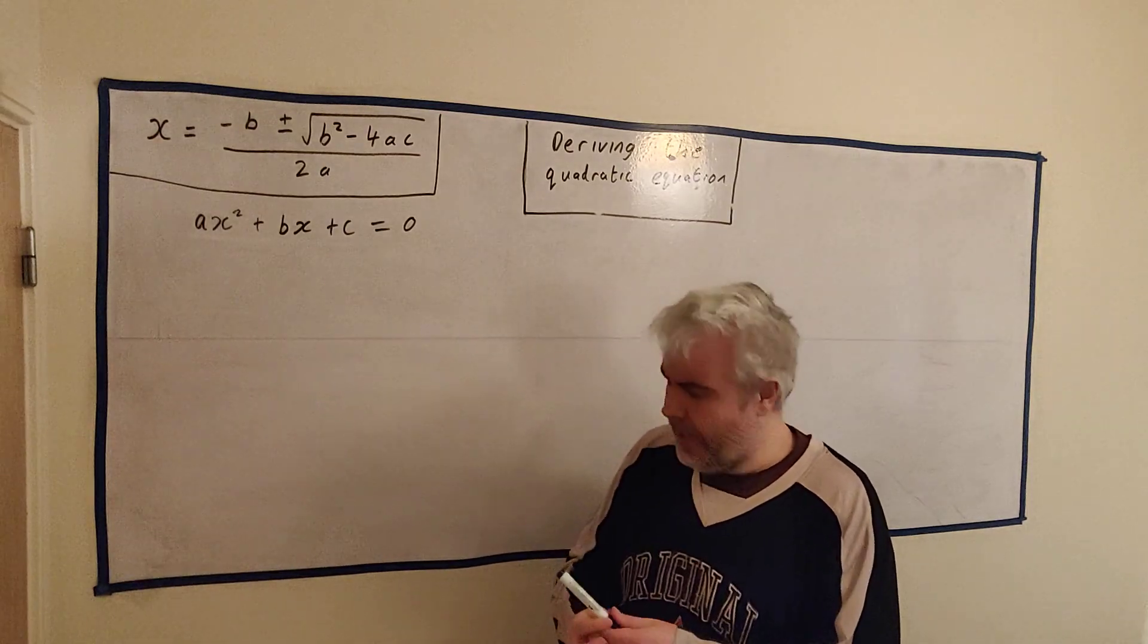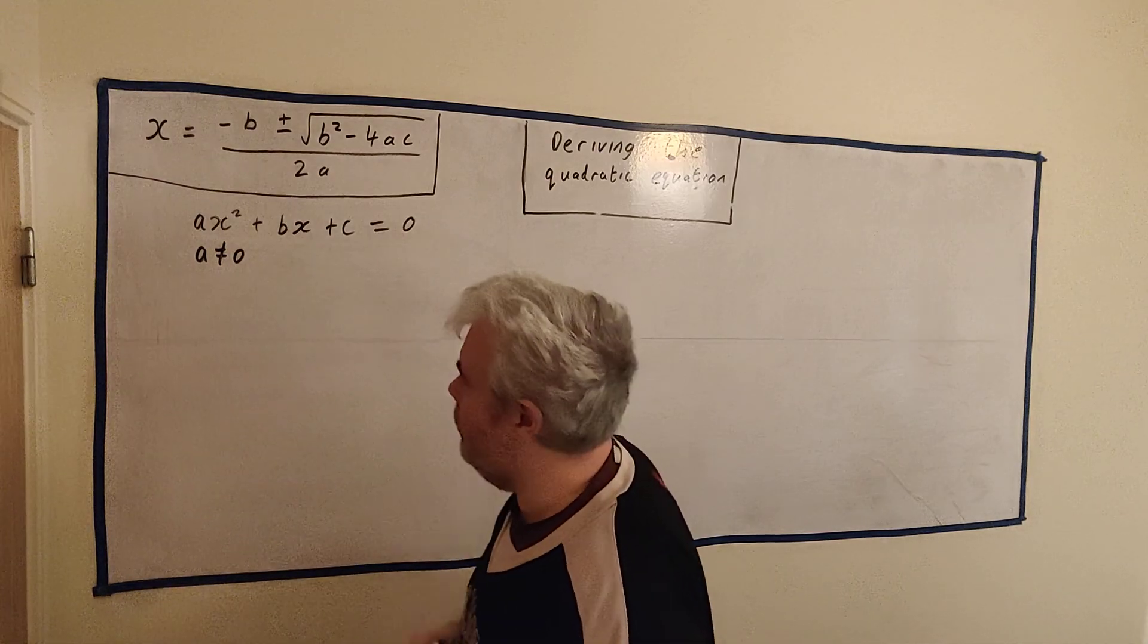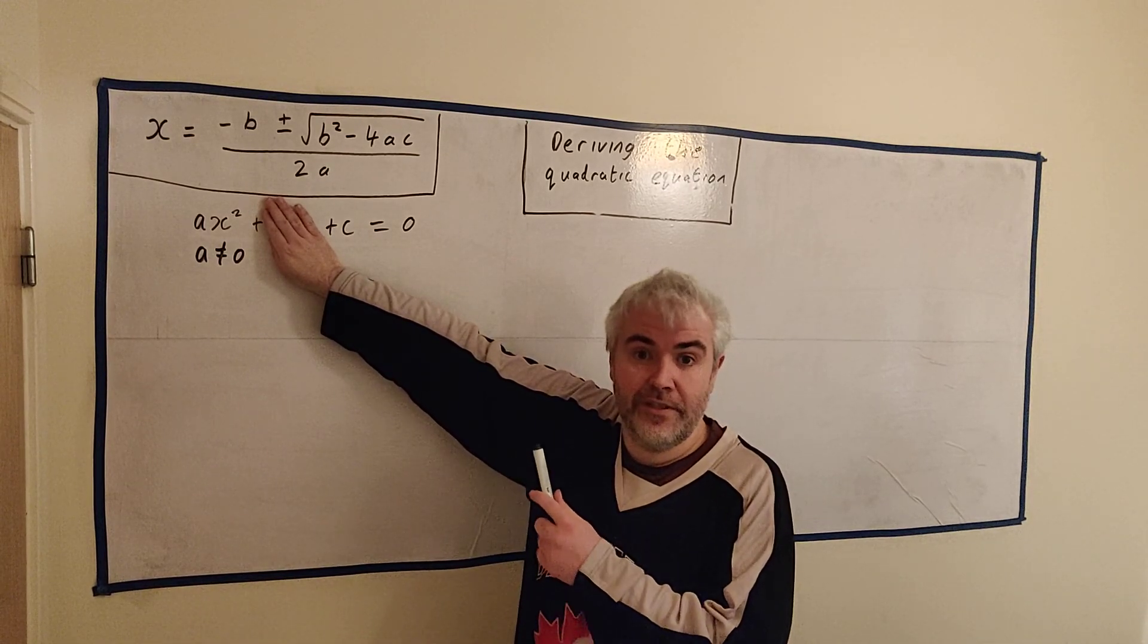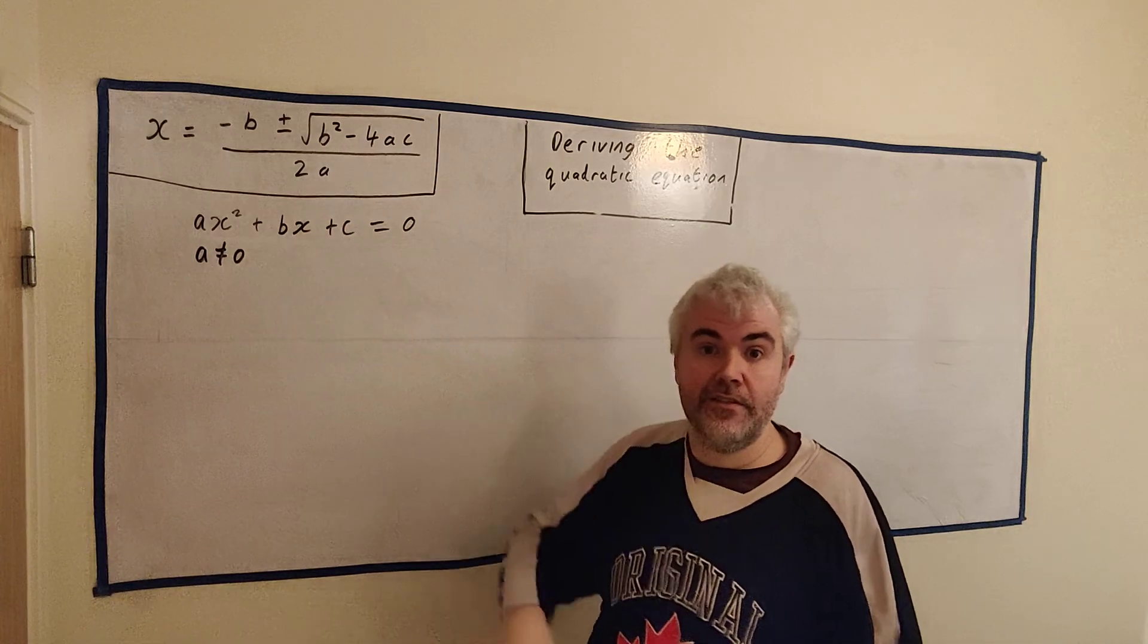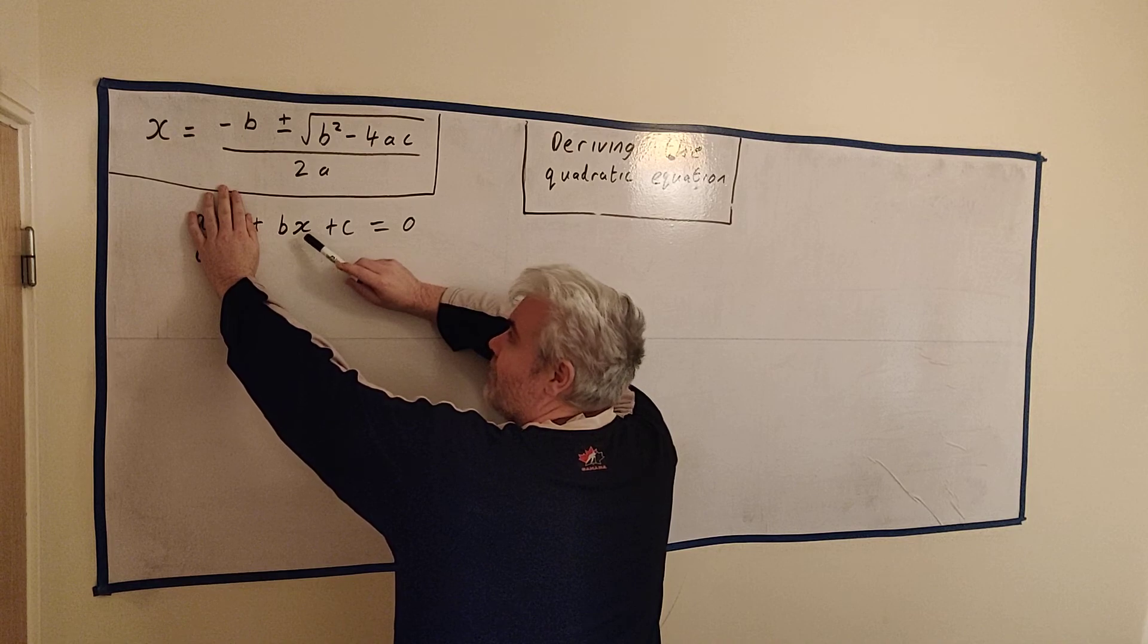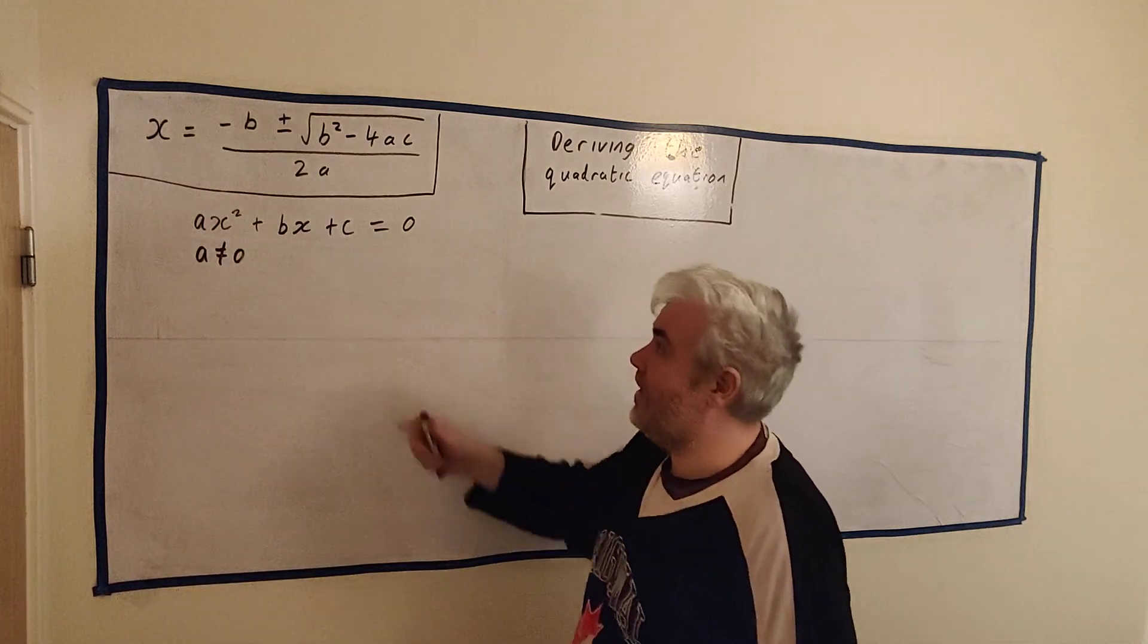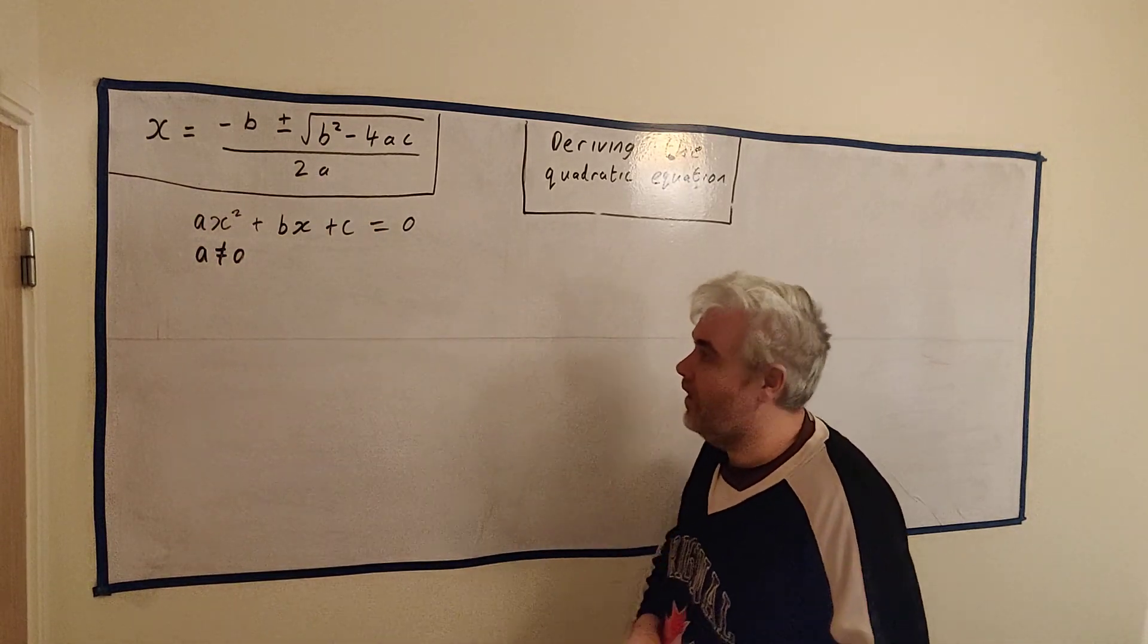One exception here: a cannot equal 0. That would be the only exception. It's okay if b is 0, this will still solve correctly. If c is 0, this will still solve correctly. But if a is 0, well this is easy anyway. The answer is x equals minus c divided by b. The reason a equals 0 would be a problem is because you cannot divide by a.